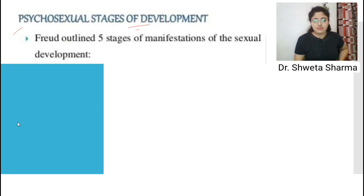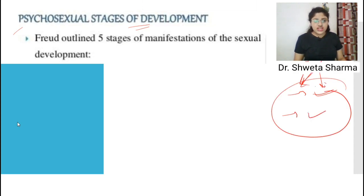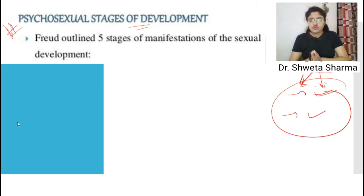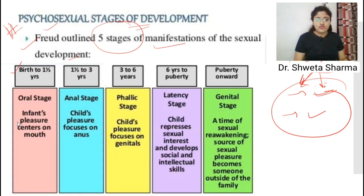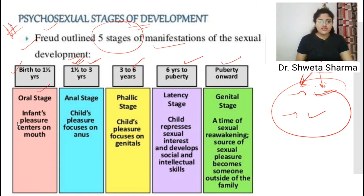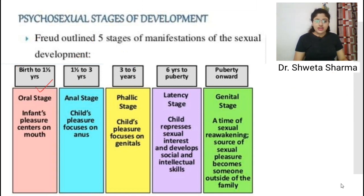Now let's talk about the psychosexual stages of development, also given by Sigmund Freud. We have covered the topographical model and the psychic model — both were given by Freud. There are five psychosexual stages. The age ranges are: birth to one-and-a-half years, one-and-a-half to three, three to six, six to puberty, and puberty onwards.